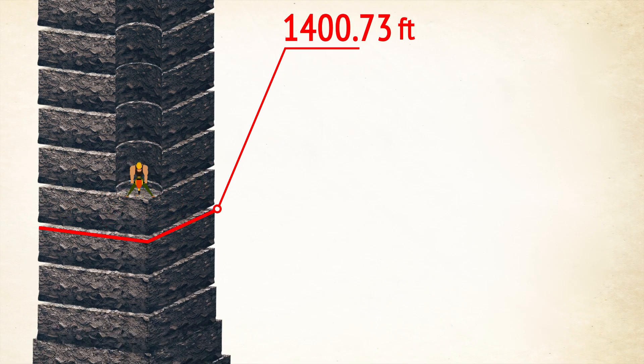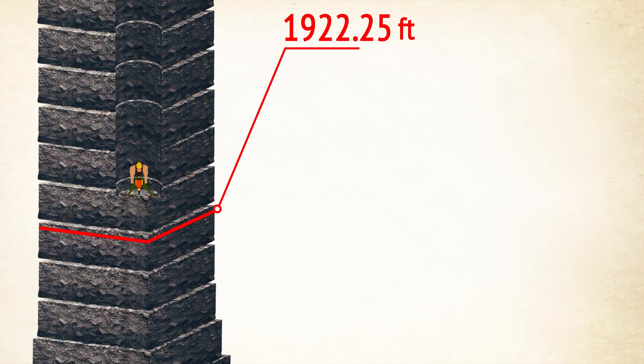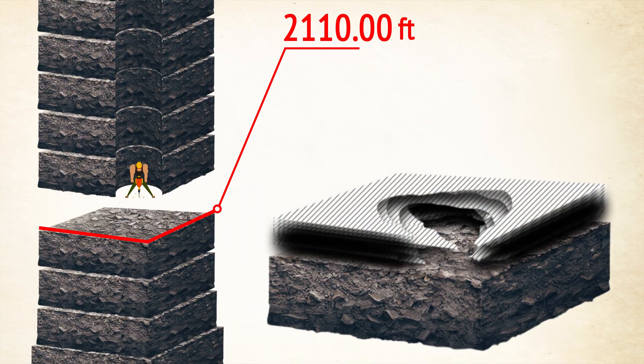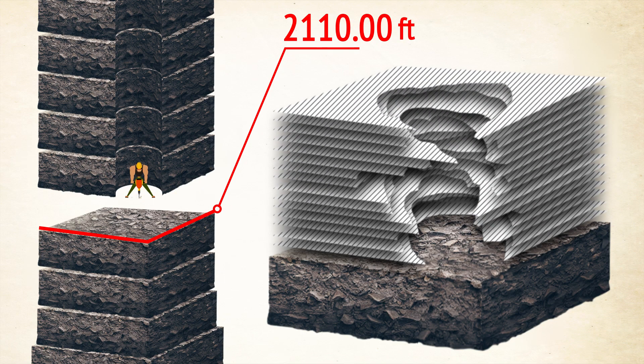Remember this number: 2,110 feet. That's how far down the deepest natural shaft in the world goes. It's the Vrtoglavica Cave in Slovenia. If you were unlucky enough to fall down this shaft, your fall would last 11 seconds before you reach the bottom.